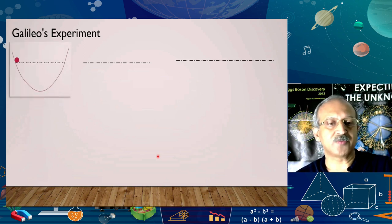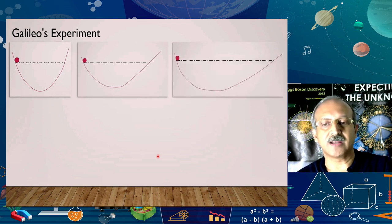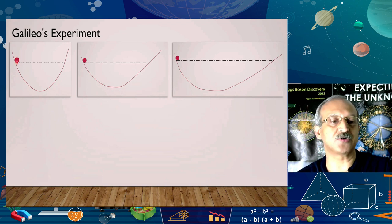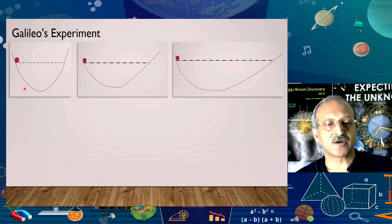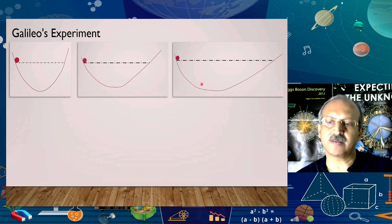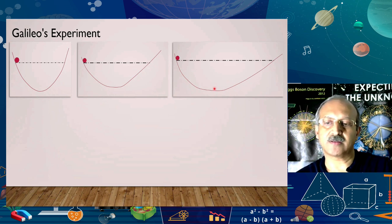We then went on to look at Galileo's experiment. Galileo took highly polished curved surfaces and a very polished sphere, and dropped the sphere along the curved surface. What he noticed was that each time the sphere rose up on the other side to the same level. When he extended one side, in spite of the longer path, the body still rose to the same height.